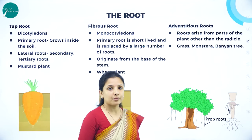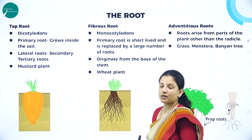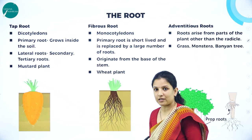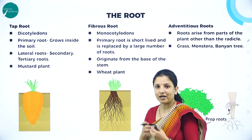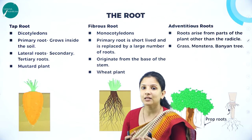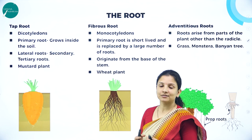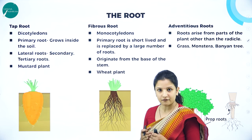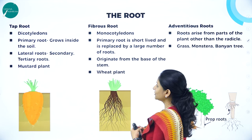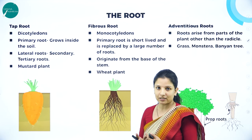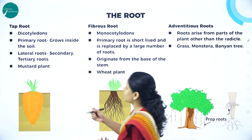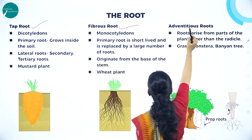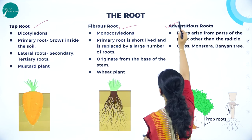Talking about the root — root is the underground part of the plant, and it is very useful because it helps the plant absorb nutrients, minerals, and water from the soil. In roots, there are different types: taproot, fibrous root, and adventitious root.